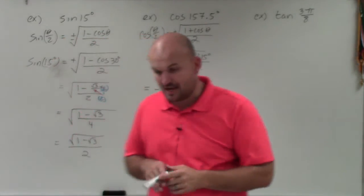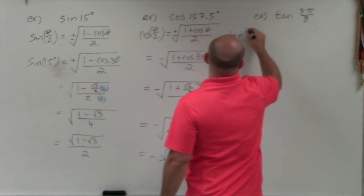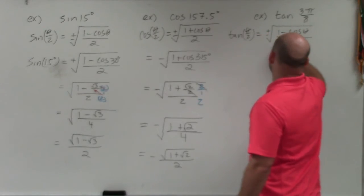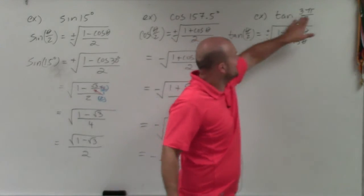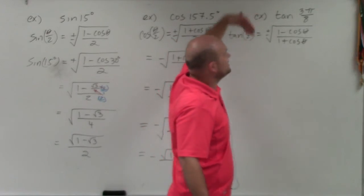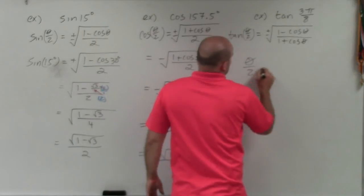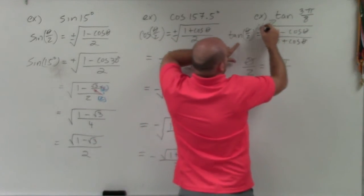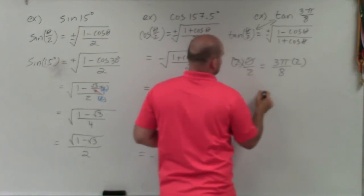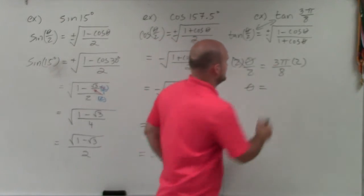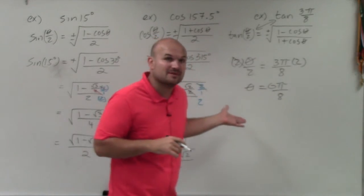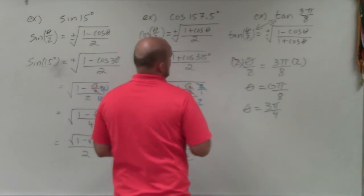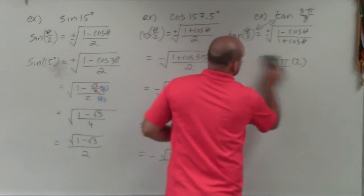Now let's get into tangent. The half-angle formula for tangent is: tangent of theta divided by 2 equals plus or minus the square root of 1 minus cosine of theta, divided by 1 plus cosine of theta. For tangent of 3π over 8, this represents theta divided by 2. To find theta, we multiply by 2: 2 times 3π over 8 equals 6π over 8, which reduces to 3π over 4. So theta equals 3π over 4.